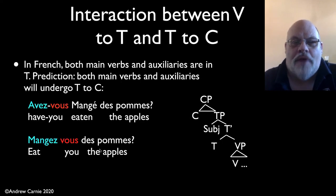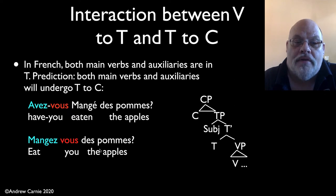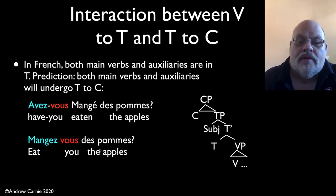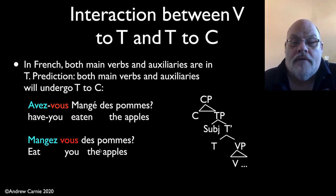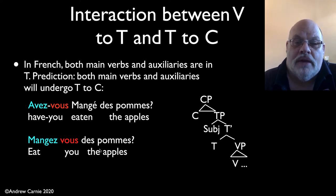There's an interesting property here: the interaction between V to T movement and T to C movement. Recall from our previous video that we claimed that in French, both main verbs and auxiliaries are in T — verbs have undergone V to T movement. An interesting prediction of this is that if you have T to C movement in a language that also has V to T movement, main verbs will, in fact, undergo subject-aux inversion. And this is indeed the case.